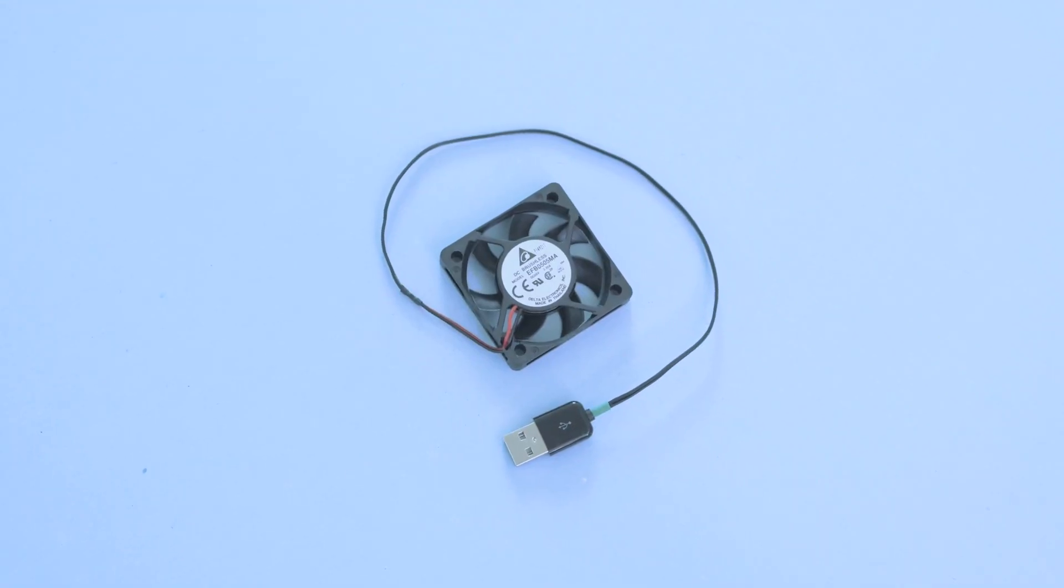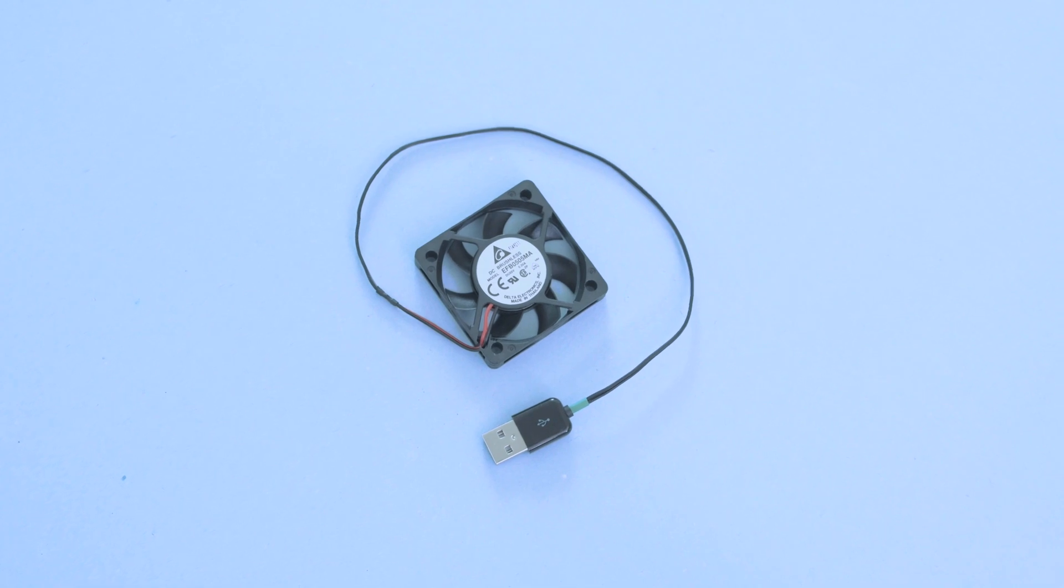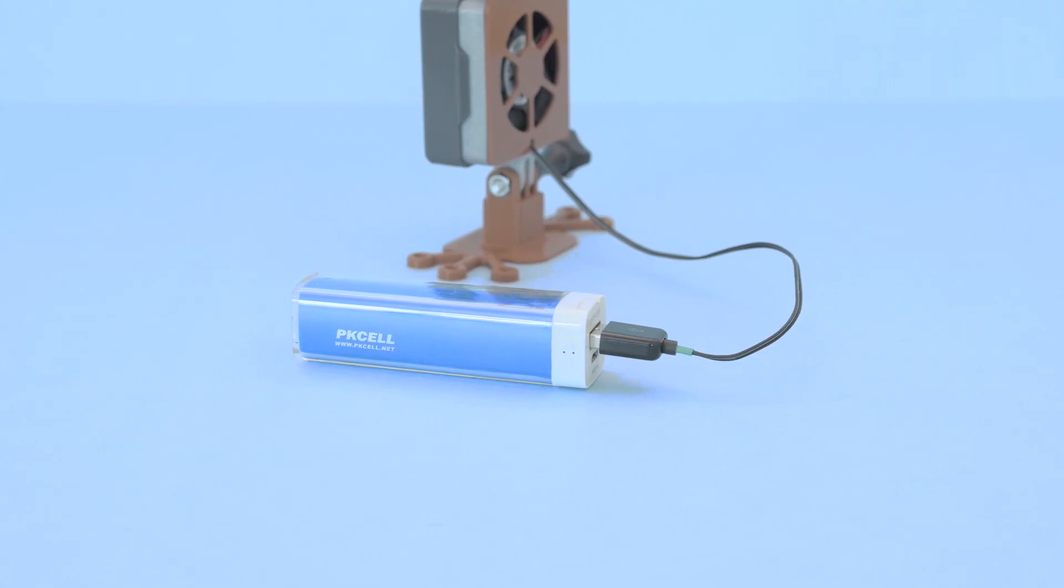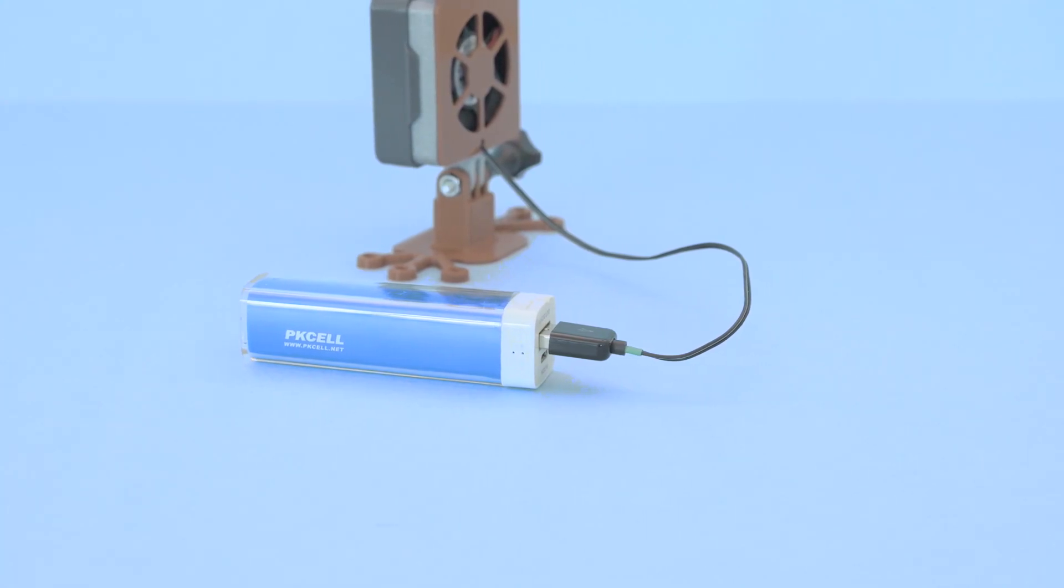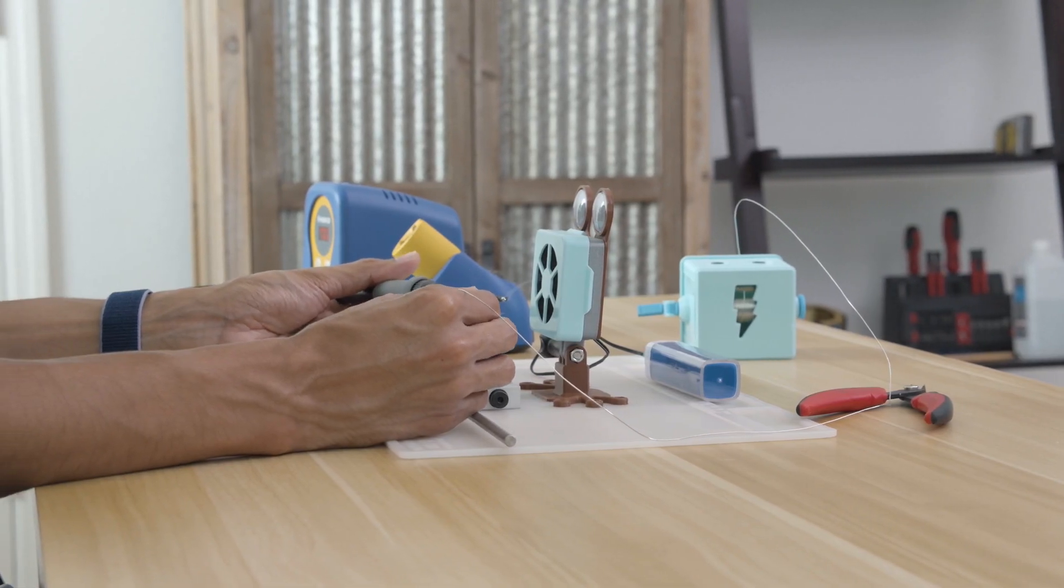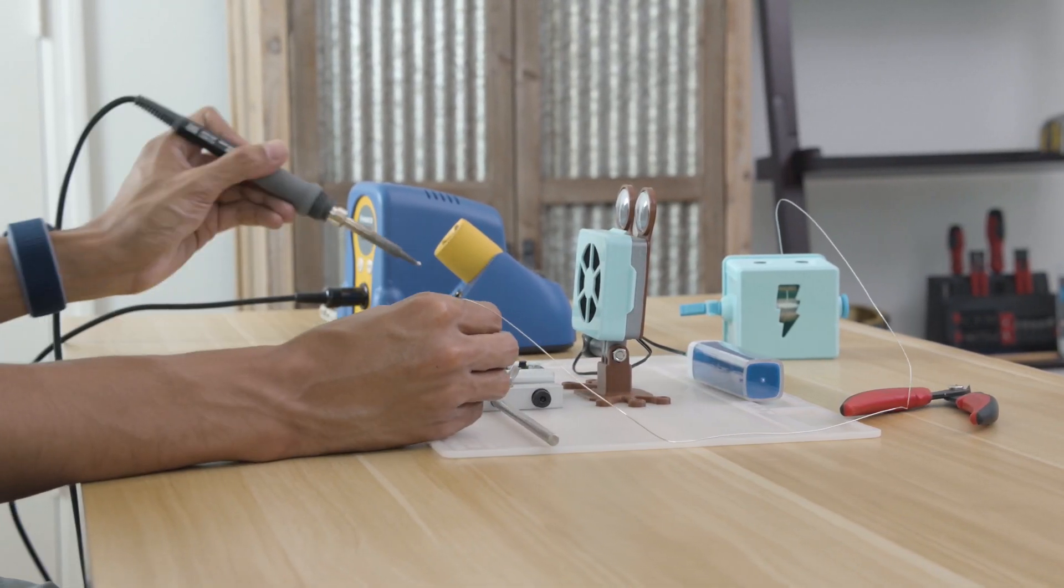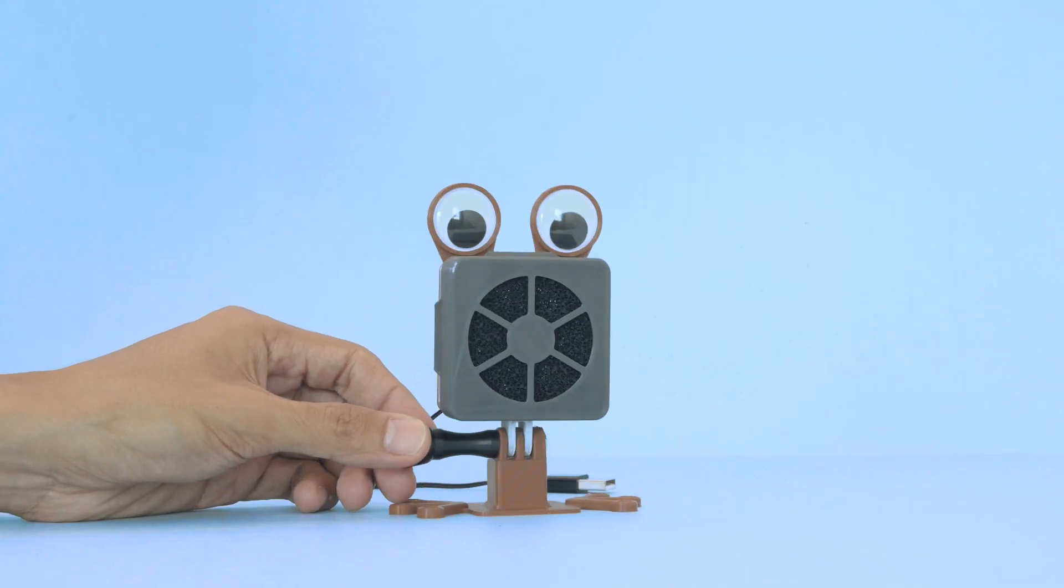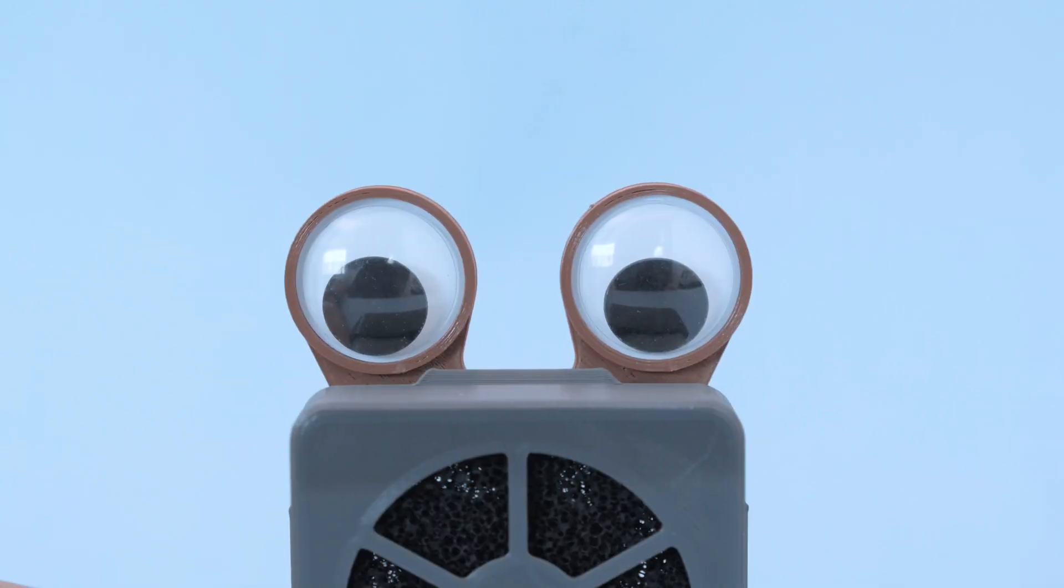This uses a 5 volt DC fan that we wired up to a USB connector. You can power it from a USB battery or plug it into any 5 volt USB hub. It's small and doesn't take up too much space, so you can move it around when you need to. We added googly eyes just for fun, but it actually looks more cute this way.